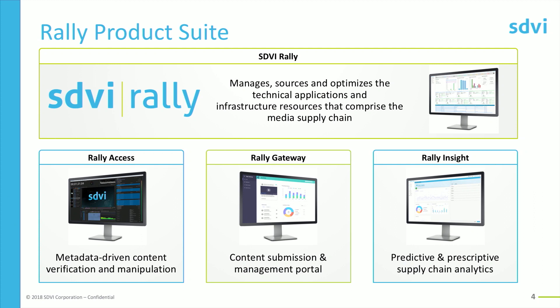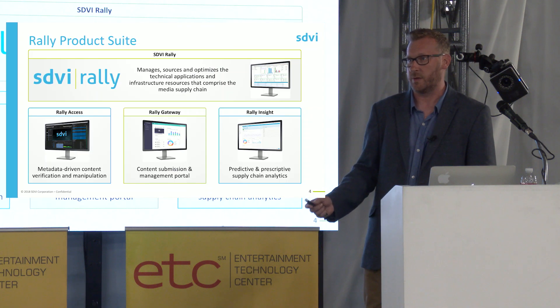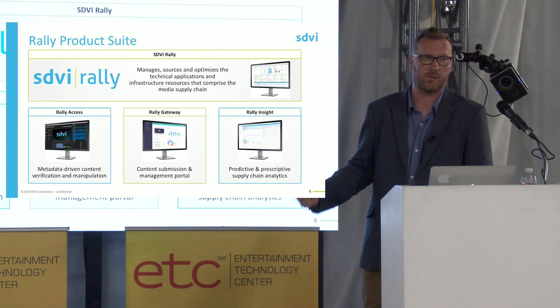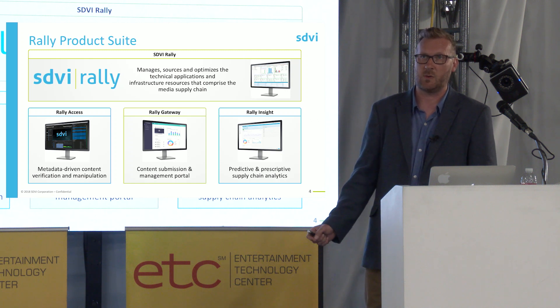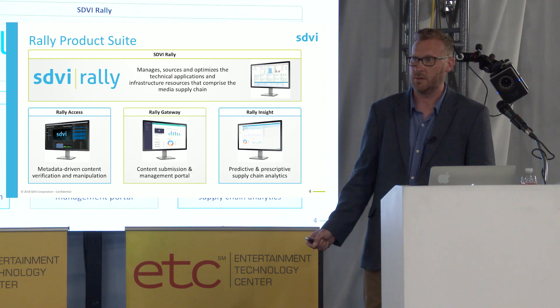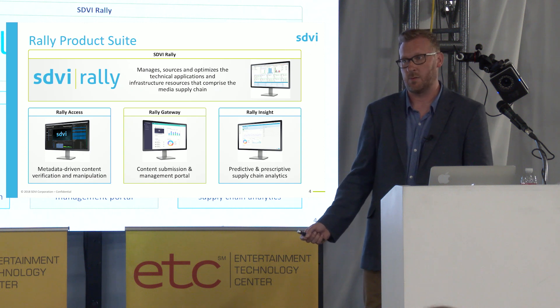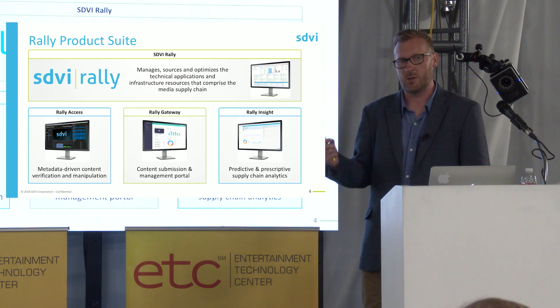Just to give you context of where the AI thing fits in, this is our product suite. The SDVI Rally is essentially the factory. This is where you create your business rules to say, here's what I'm expecting to come in, here's what I want to do to it, and here are the deliverables I want to go out the other end. That's really for factory operators — they're managing the exceptions as the content automatically flows through the facility. The Access product, which is where I'll spend most of my time today, is designed to allow operators to interact with that manufacturing process. There are some things that can't be automated, such as manual QC — you need a mechanism to efficiently allow that operator to interact with the content as it goes through the supply chain.